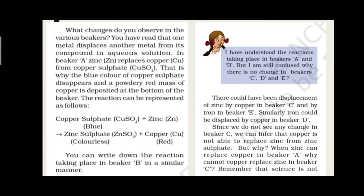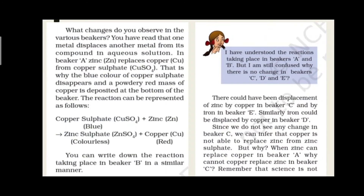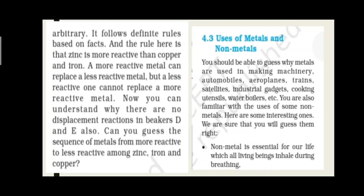उसी तरह Beaker B में भी displacement दिखाई देता है। Beaker B के अंदर Iron, Copper को displace करता है, Iron Sulfate बनाता है और Copper green color में free होता है। लेकिन Beaker C, D और E में कोई भी type का change possible नहीं है।